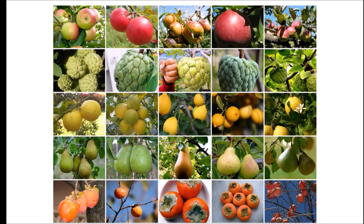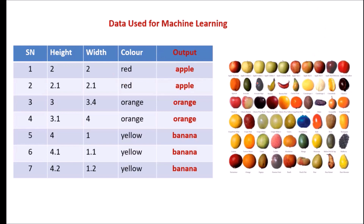So to identify the fruit, first we need to give input fruit images to our machine learning model. And the main step is to extract the important features from these images for further processing. Now there may be a lot of features. For example, to identify the type of fruit, we may use three types of features like height of each image, width, and color of that particular fruit image.